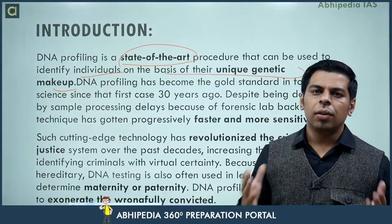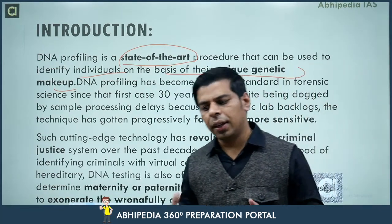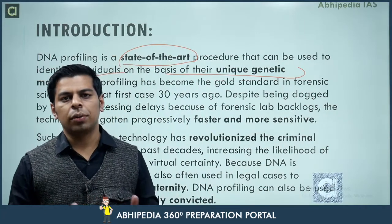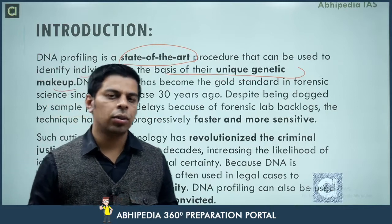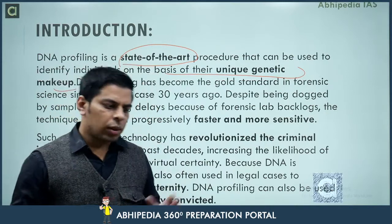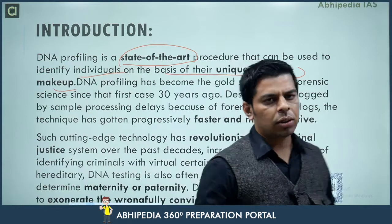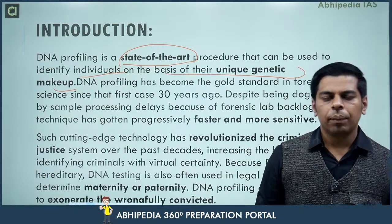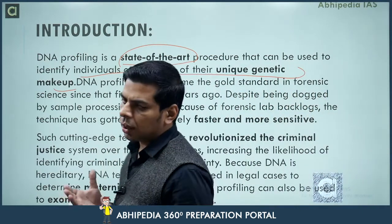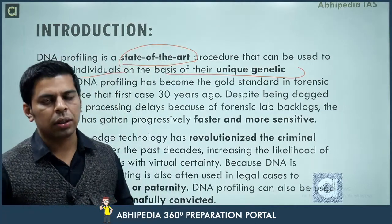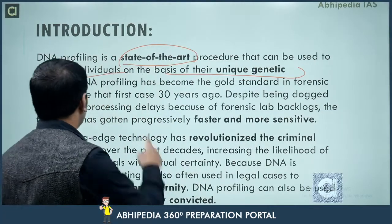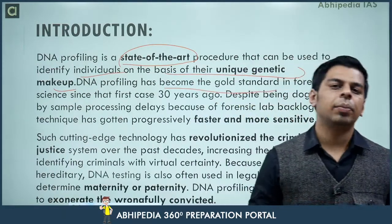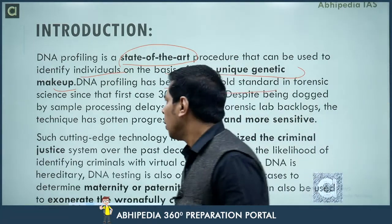We know that 99.1 percent of DNA in all individuals is more or less the same — it is the 0.9 percent where there is a difference, and this is what gives each individual a unique identity. There's no need to mention VNTRs or specific systems unless you know them; keep the answer on a generalist line. This technique is considered the gold standard in forensic sciences.